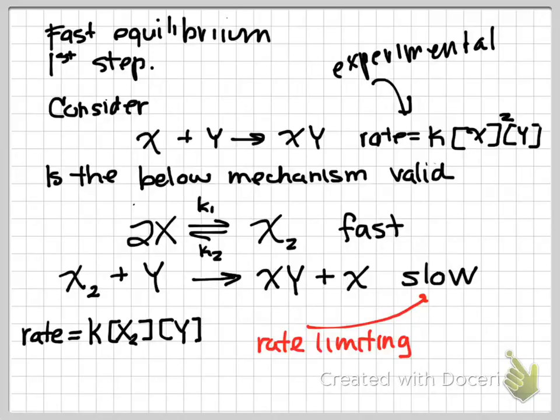The problem with this rate equation is that in my rate law, I have an intermediate. Because X2, if we look at my overall reaction, is not part of my overall reaction.